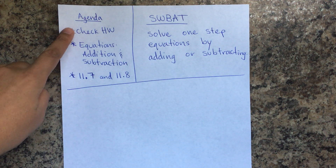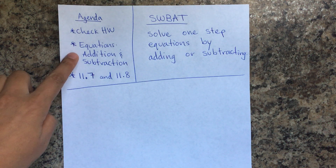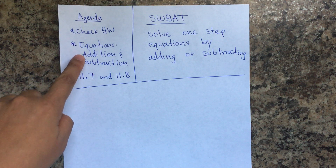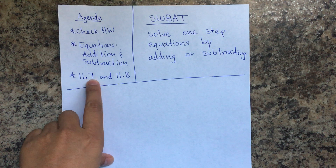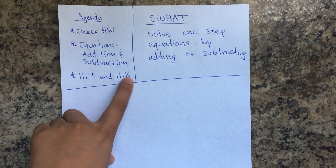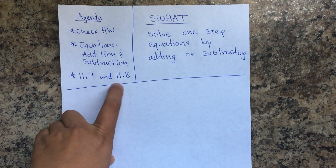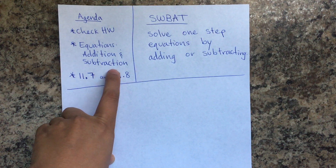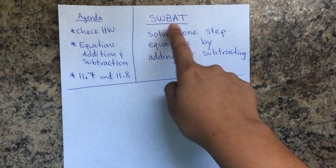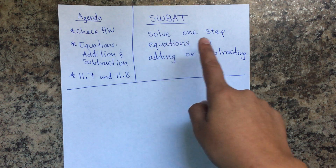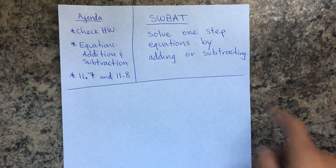Hello students, today's agenda is to check homework. You will be learning about equations and we'll be doing only addition and subtraction. You will be able to do 11.7 and 11.8. The first four examples are for 11.7 and the last four examples are for 11.8. Today students will be able to solve one-step equations by adding or subtracting.